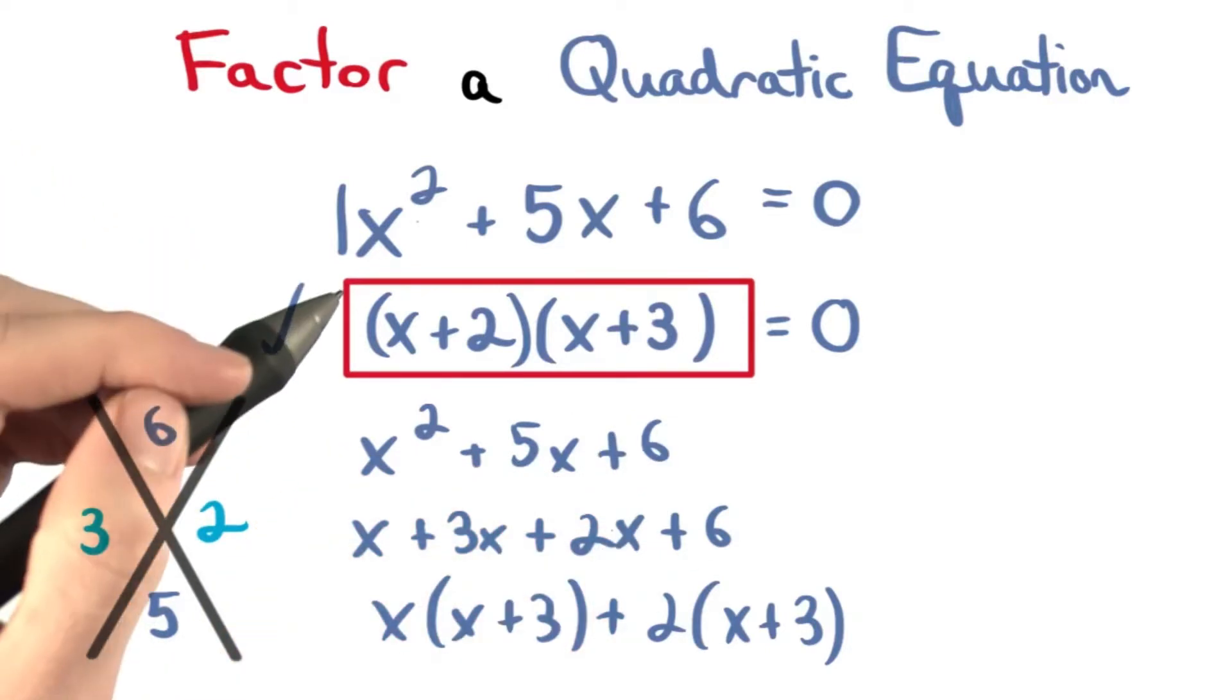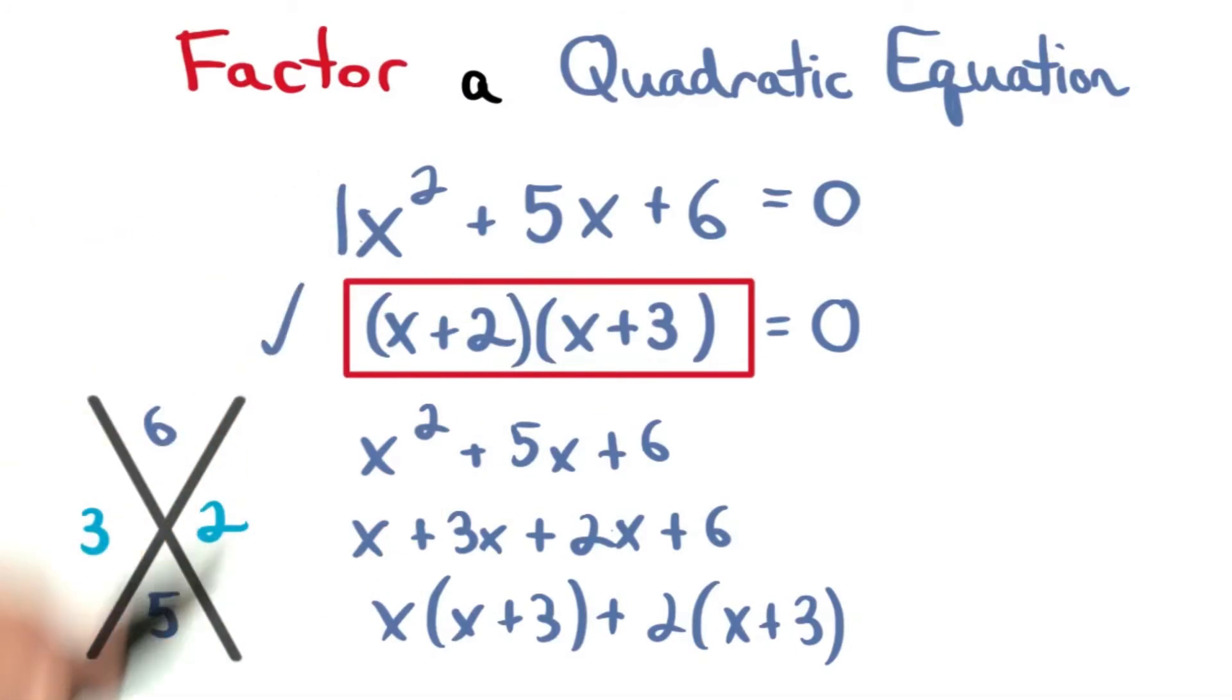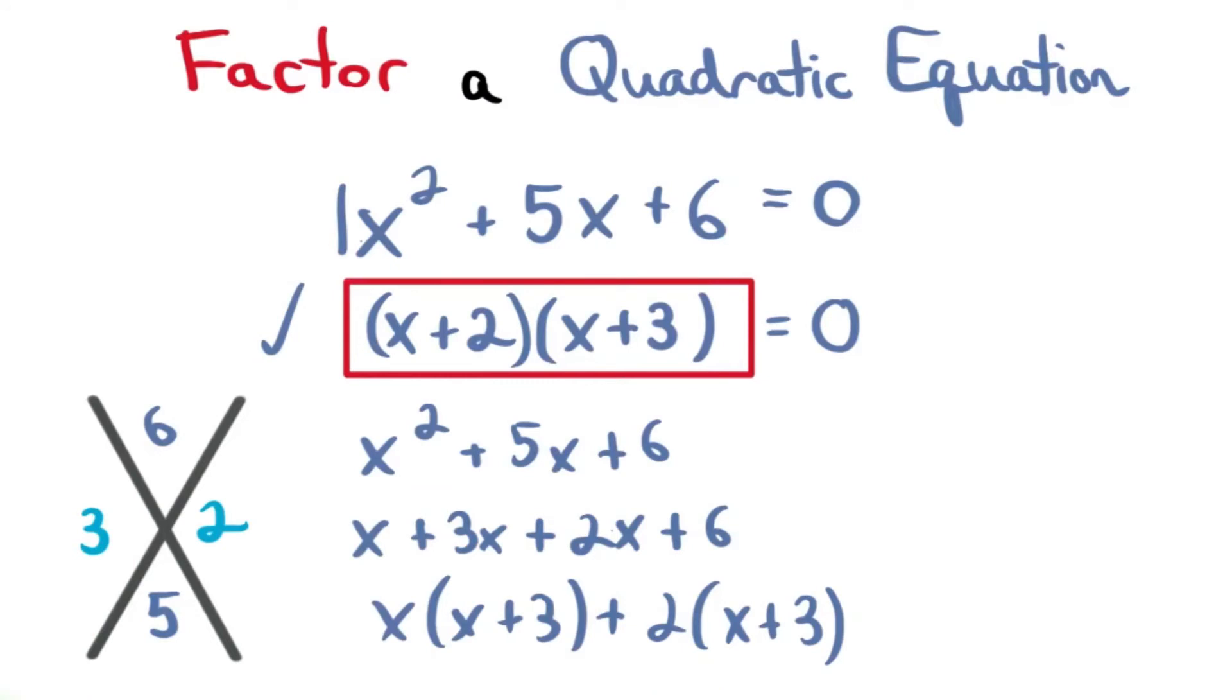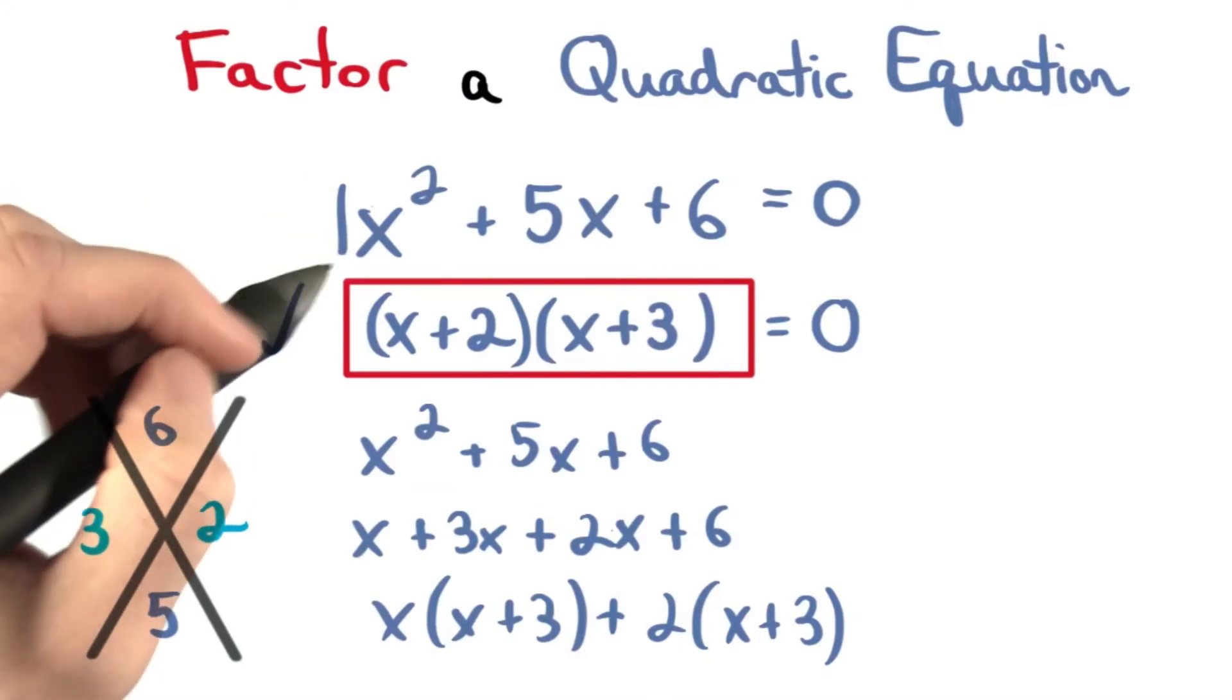You might have noticed a pattern when factoring trinomials that have an a value of 1. The two factors here always appear in these parentheses. But keep in mind that this is only if the a value is 1.